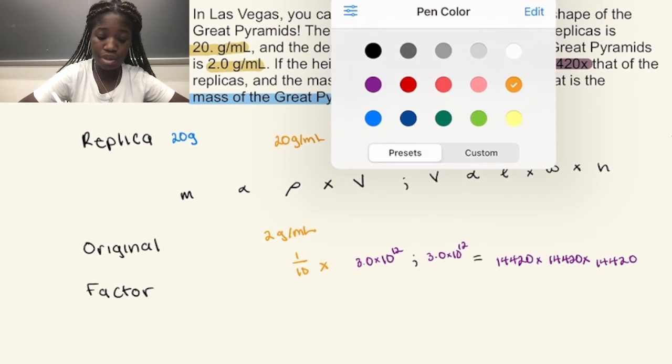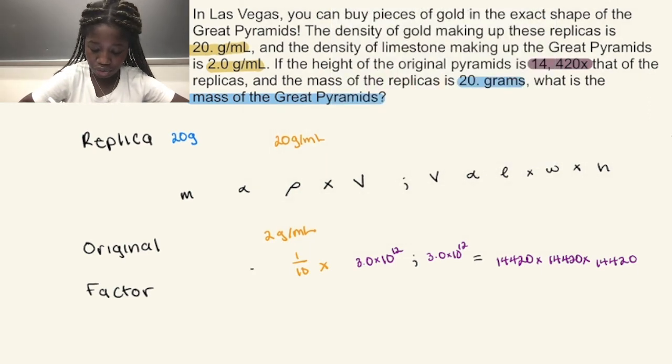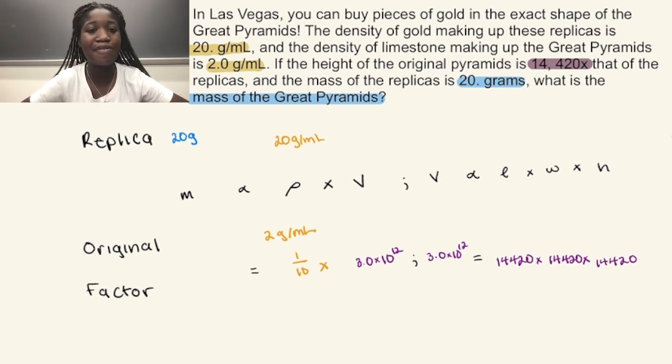Now we have both of the components needed to solve for the factor for mass. Our factor for volume is 3 times 10 to the 12th or 3 times 12 tens. If you're dividing by one-tenth, you have 11. So our factor for mass is 3 times 10 to the 11th.